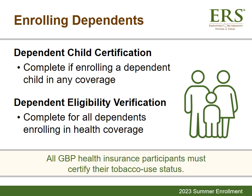The Dependent Eligibility Verification is separate from the Dependent Child Certification. This process must be completed if you enroll a new dependent in health insurance coverage. Once ERS processes your dependent's enrollment, Alight Solutions, our third-party administrator, will send you a letter outlining the steps in the verification process, the names of the dependents being verified, the types of documents to provide, and the due dates to submit documentation. You must respond to the letter or your dependents will be dropped from all coverage.